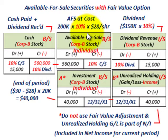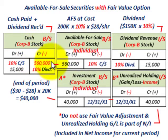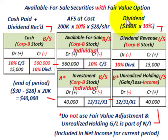Now for available-for-sale securities with the fair value option: again, you set up your available-for-sale securities account at cost, but on an individual basis. You set it up for each security separately — in this case, labeling it 'available-for-sale security, Corp B stock.' So you debit that for $560,000 and credit cash $560,000. Dividends are the same: 10% of the $150,000 cash dividend, so credit dividend revenue $15,000 and debit cash $15,000. When using the fair value option, you break out securities on an individual basis.